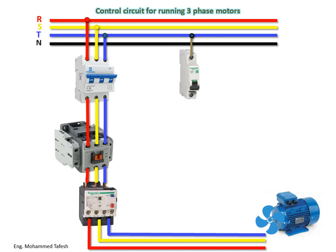After that, we connect from the circuit breaker to the push button ON — the operating button, which is marked in green because it expresses the operating state. It is normally open, and when pressed it becomes normally closed, allowing electric current to pass to the rest of the circuit components and operate them.